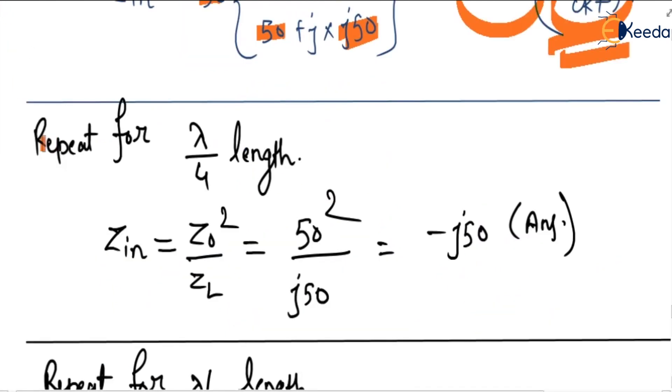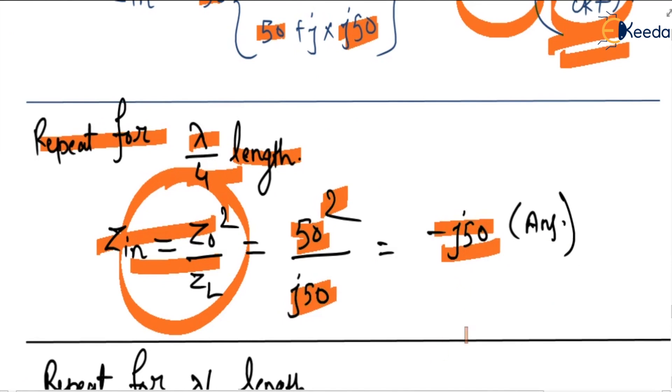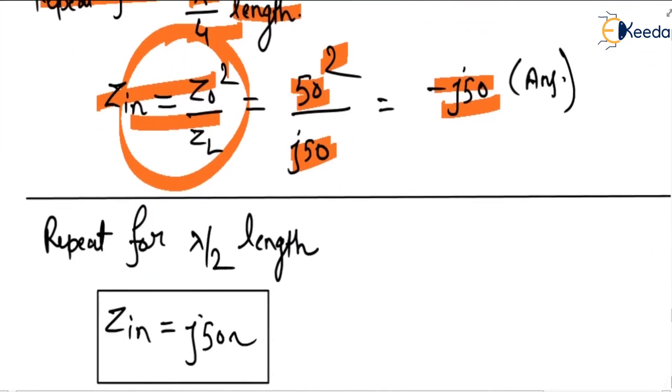If we solve this circuit for lambda by 4 length, then for lambda by 4 length Zin equals Z0 squared by ZL, which is 50 squared by j50. So the answer will be minus j50.